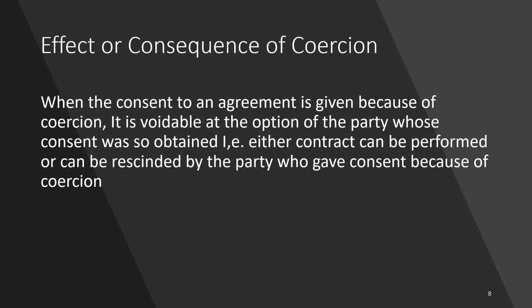When consent to an agreement is obtained by coercion, the contract is voidable at the option of the party whose consent was so obtained. That means if I put a gun to your head and you sign the agreement, later on the agreement is voidable at your option — not mine. You can decide whether to continue with it or make it void.